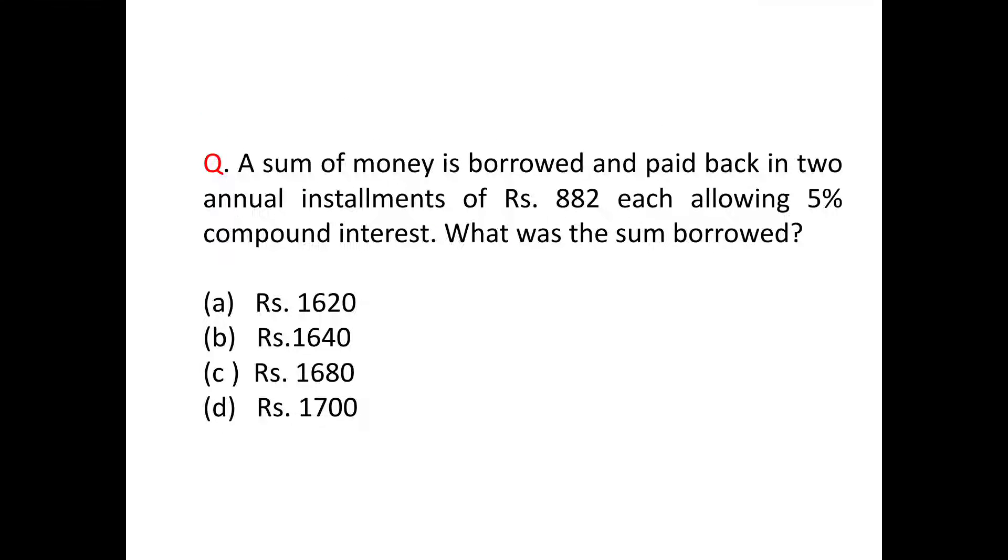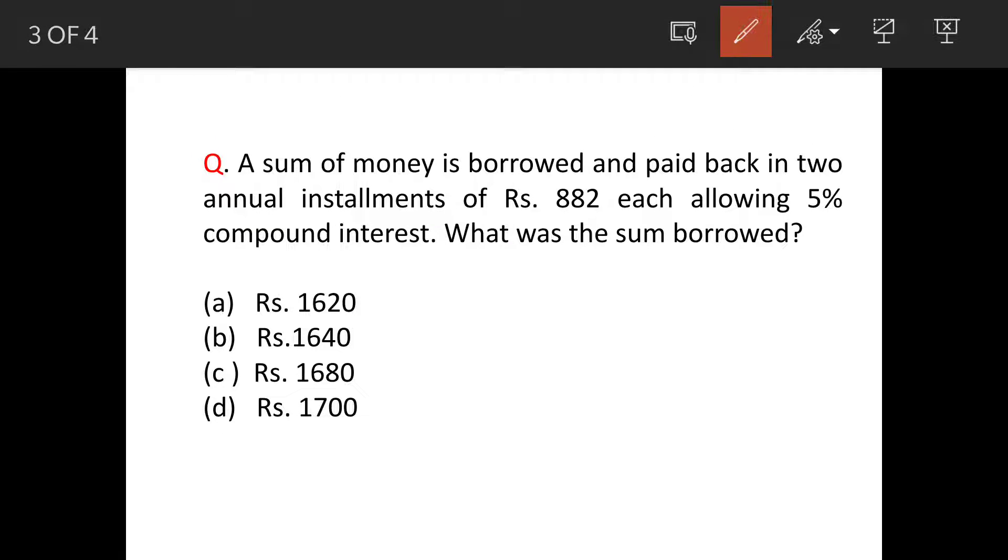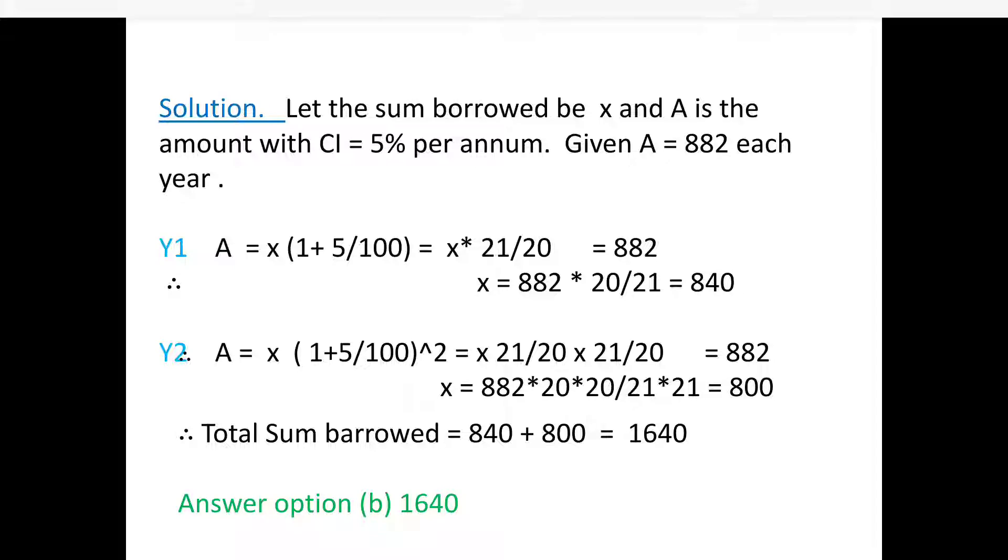The question is: a sum of money is borrowed and paid back in two annual installments of 882 rupees each, allowing 5% compound interest. What was the sum borrowed? These are the options given. Now we'll solve the question.